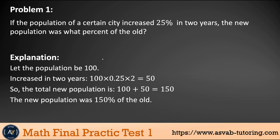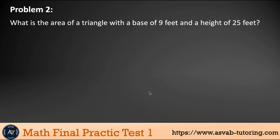So let's see how we explain this problem. So let's the population would be 100, right? So in one year, the population increased 25%. So if you find 25% of one year and then multiply by two, so that gives you 100 times 0.25. So that gives you 25, right? And then if you multiply that by two, that gives you 50. And if you add 50 with the original population is 100, that gives you 150. So that means the new population was 150% of old one.